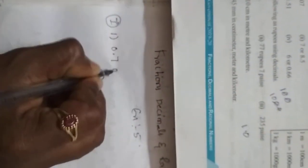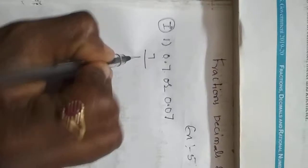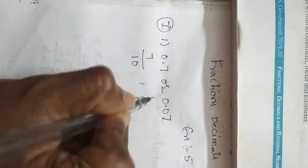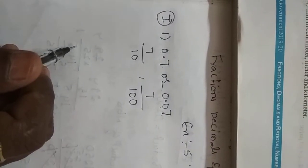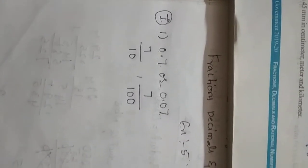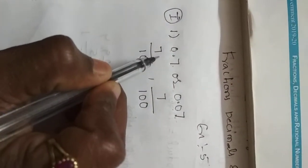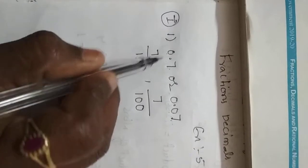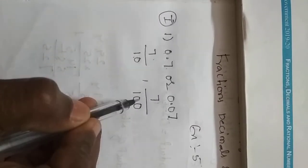0.7 means 7 by 10. 0.07 means 7 by 100. See, 7 is divided by 10 means 7 is made into 10 parts. This is greater, or 7 is made into 100 parts? This is greater.